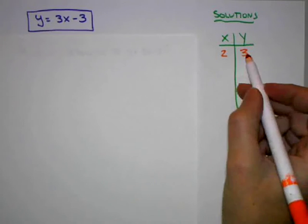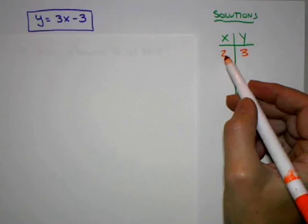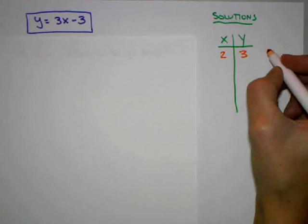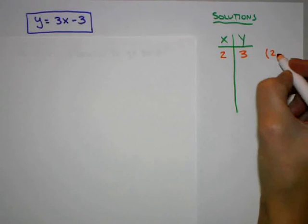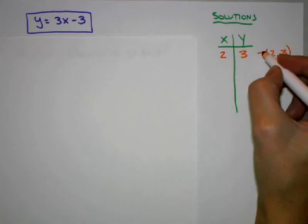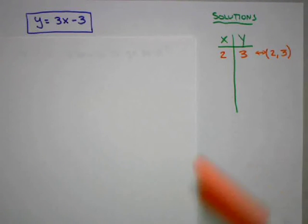I'm going to note that point in an xy table here. Notice that putting 2 in the x column and 3 in the y column is just another way of writing the point (2,3). These two ways of representing this point are equivalent to each other.